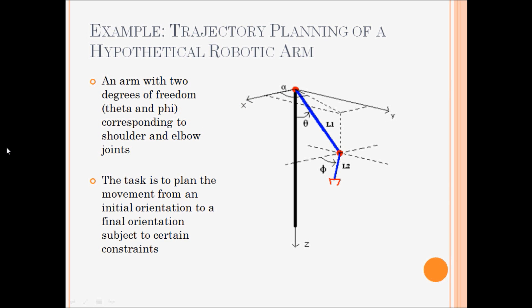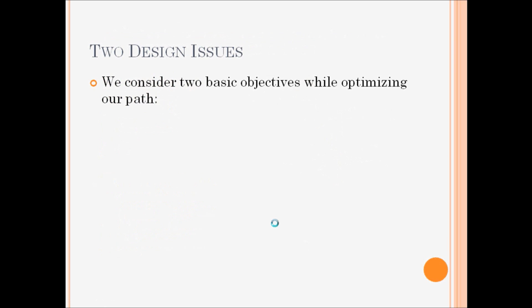Let's take an example of the trajectory planning of a hypothetical robotic arm. The arm has two degrees of freedom, theta, this is the shoulder angle, and phi, which is the elbow angle. And the task of the planner is to move from an initial orientation of theta and phi to a final orientation of theta and phi.